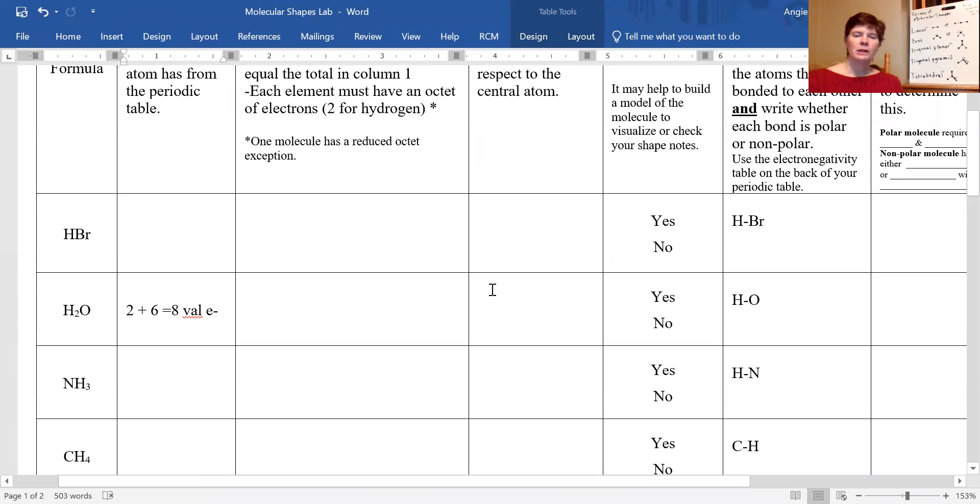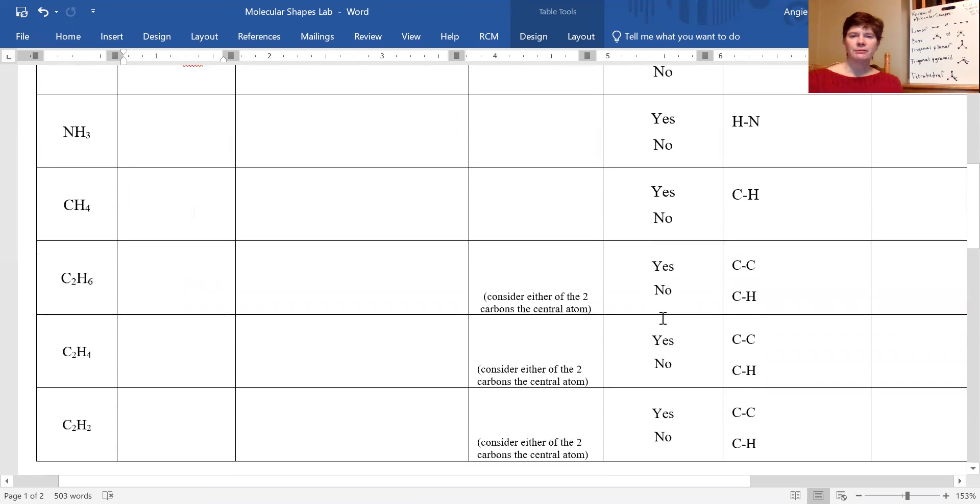So first of all, the shape bent cannot be symmetrical. And secondly, we check and see yes, there are lone pairs on this central atom, and that indicates that this is not symmetrical. So let's go back to our shapes lab and I'll show you what that looks like. So you should have drawn the ball and stick model including the bonds and the lone pairs here and then written bent. Is this symmetrical? The answer is no, so you would circle no. Bent molecules cannot be symmetrical.